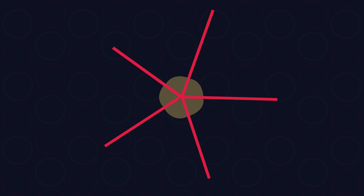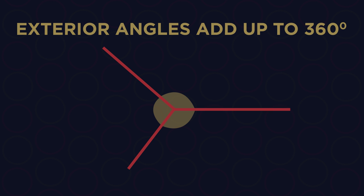If we take all of the exterior angles and pull them together, they will always make 360 degrees. This is true for any polygon. The exterior angles will always add up to 360 degrees.